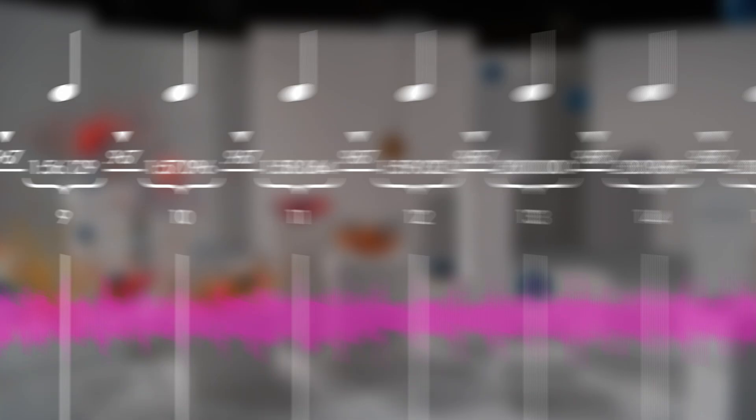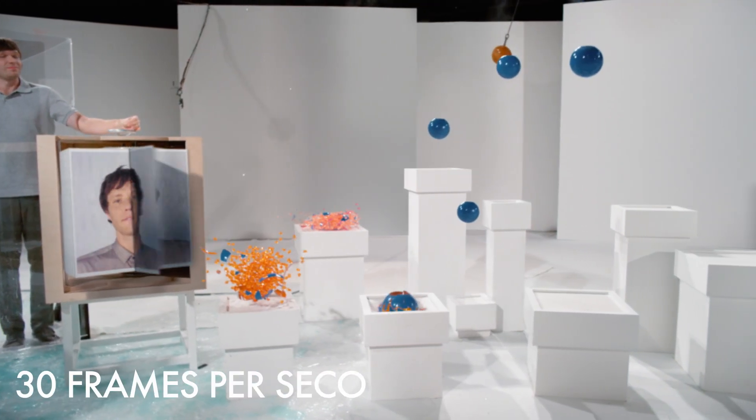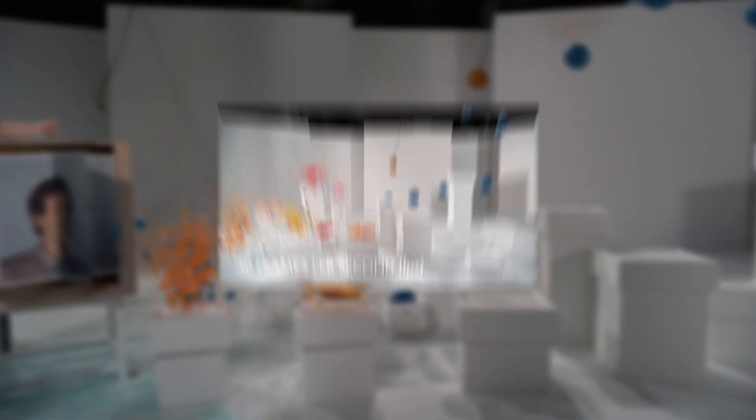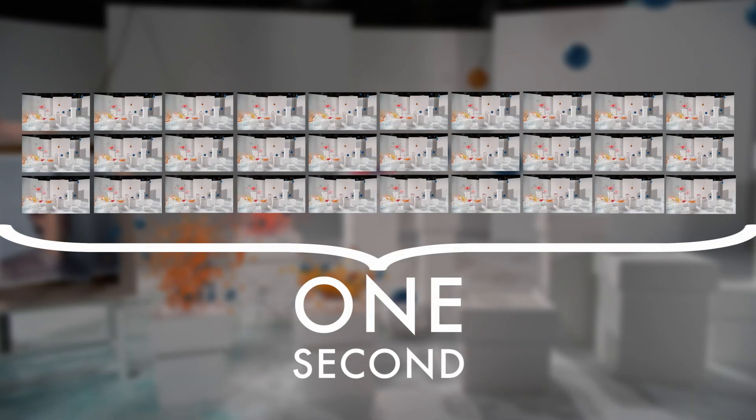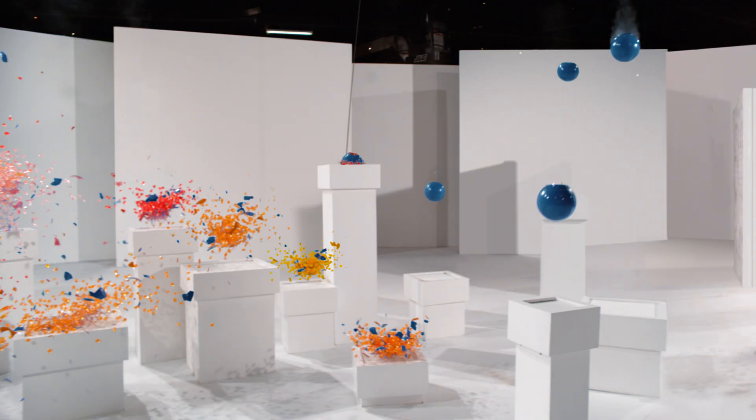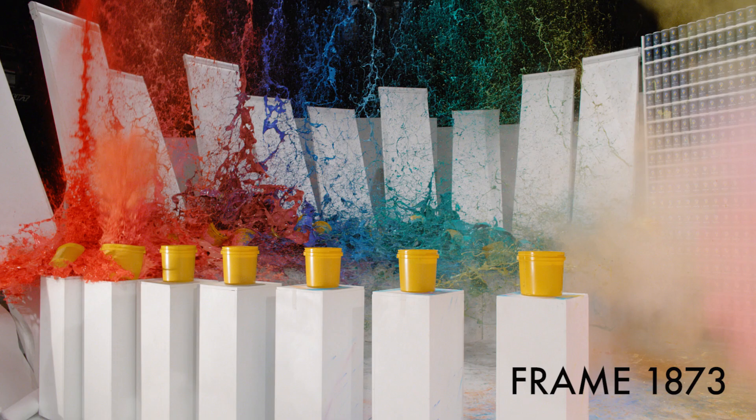Now for this video our base frame rate is 30 frames per second, and what that means is that for each second of finished video there are 30 still pictures that the camera is taking. So really any duration of time can be thought of as actually a number of still pictures, right? And if we start at zero at the beginning of the video, each moment in the video has its own distinct picture number or frame number.